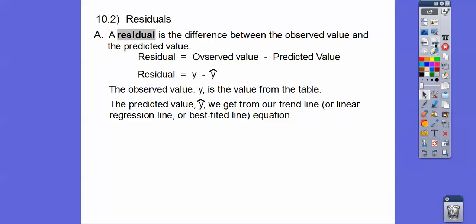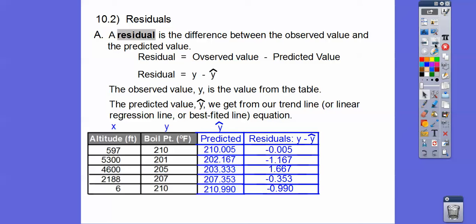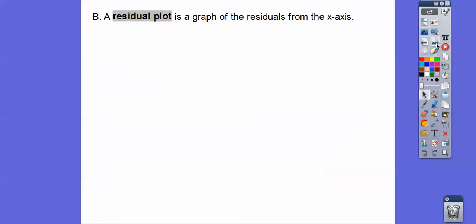Our residual is the observed value — which is the y that they gave us — minus our predicted value, and those are called the residuals. Here are the residuals: we just do the observed value minus the predicted value. So if I do 210 minus this predicted value, it gets me that. And then 201 minus this gets us that. We just do lefty minus righty on these, and they give us these residuals.